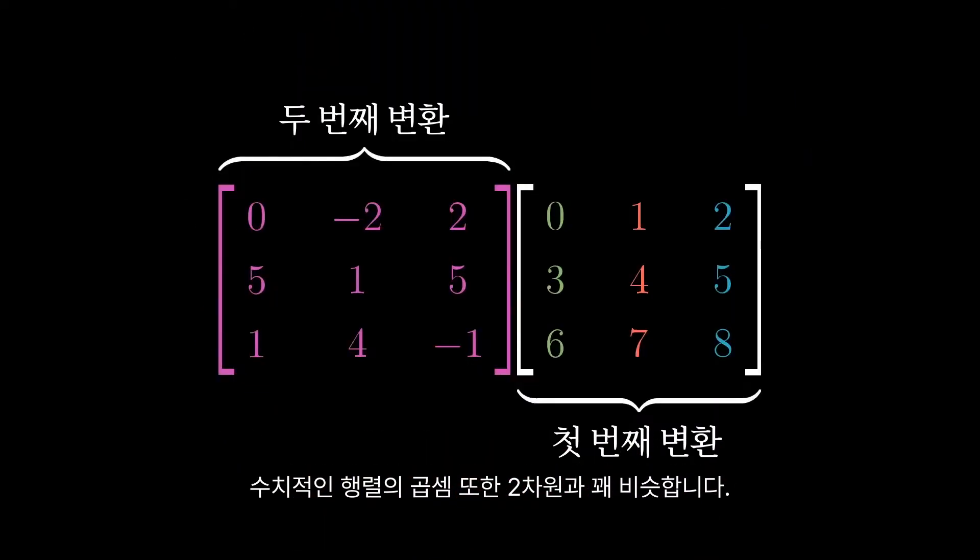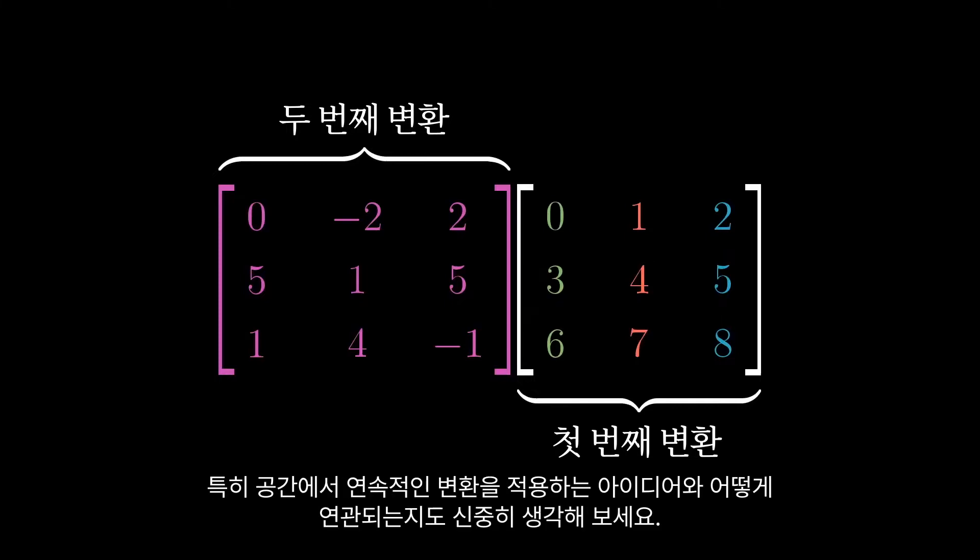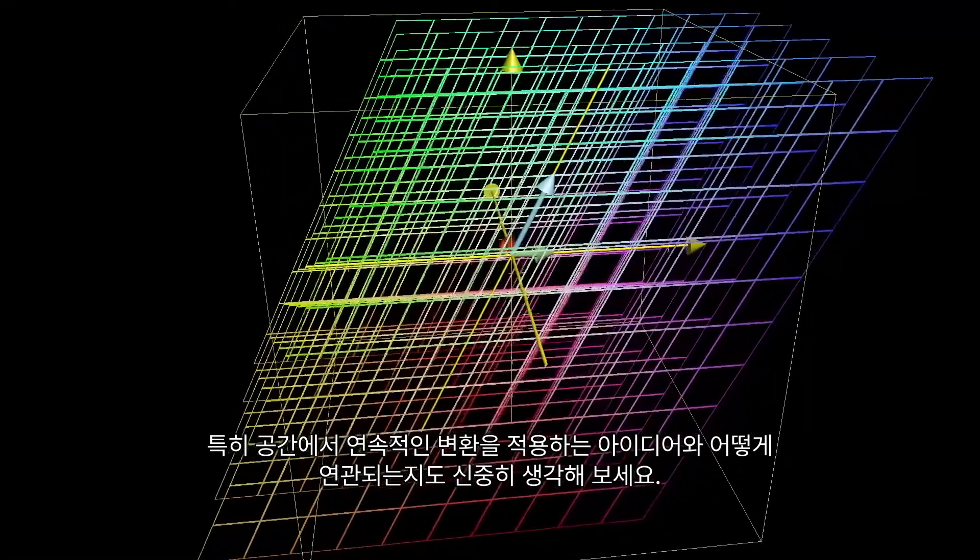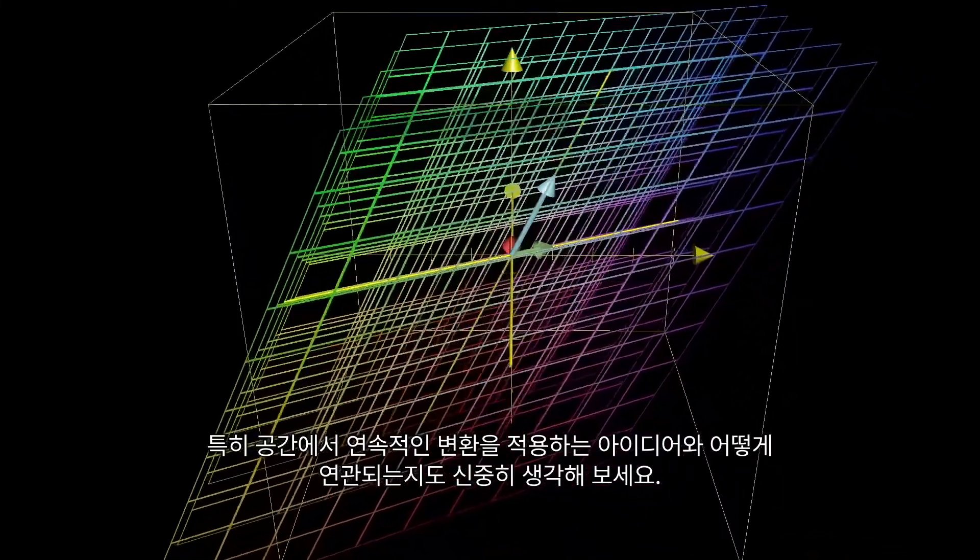Performing this matrix multiplication numerically is, once again, pretty similar to the two-dimensional case. In fact, a good way to test your understanding of the last video would be to try to reason through what specifically this matrix multiplication should look like, thinking closely about how it relates to the idea of applying two successive transformations in space.